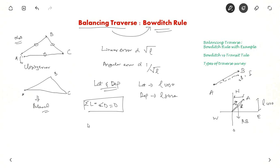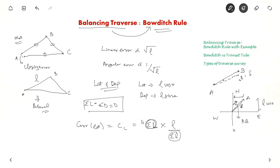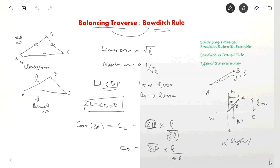The correction to latitude, represented as CL, equals sigma L — that is, when you add up the latitudes of AB, BC and CA, if it is not balancing you get an error. That error is sigma L, multiplied by the length of AB divided by the sum of lengths of AB, BC and CA — that is, the perimeter. Similarly, the correction to departure will be sigma D multiplied by the length of the side divided by the overall perimeter. Now let us see this with an example so we can understand more clearly.